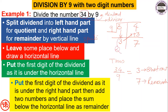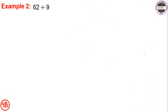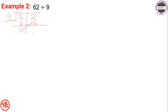So Q equals 3 and R equals 7. Similarly, for 62 divided by 9: divide into 2 parts, draw the line, write 6 below 6, then add this 6 to the right digit: 2 plus 6 is 8. Therefore quotient is equal to 6 and remainder is equal to 8.